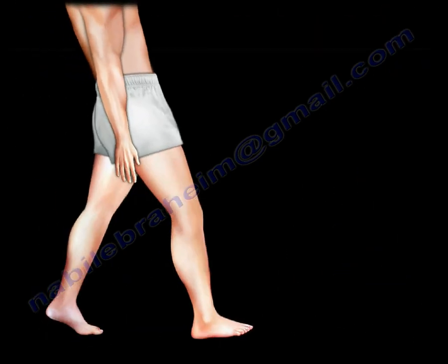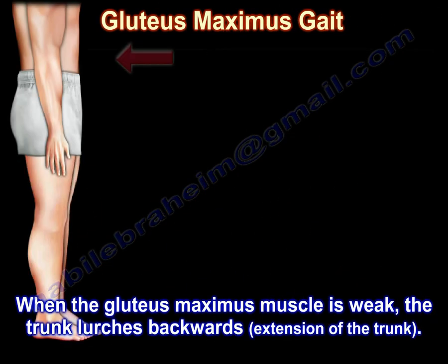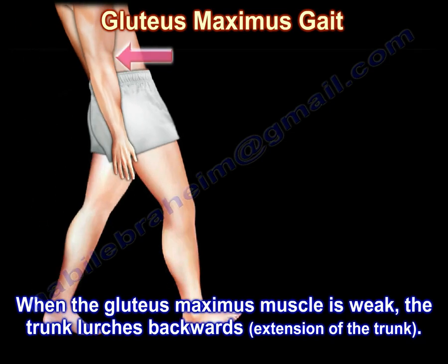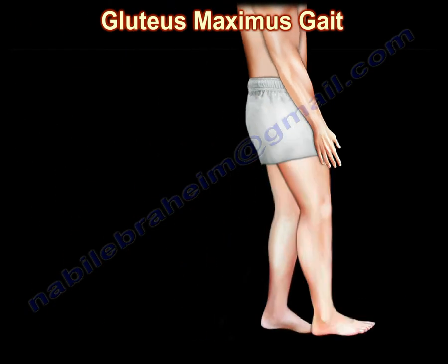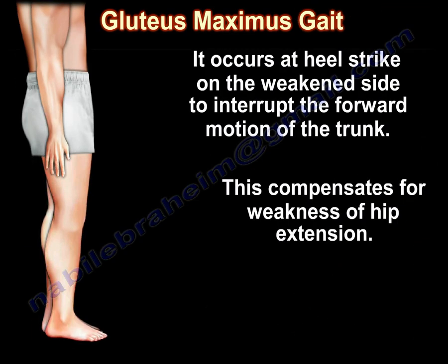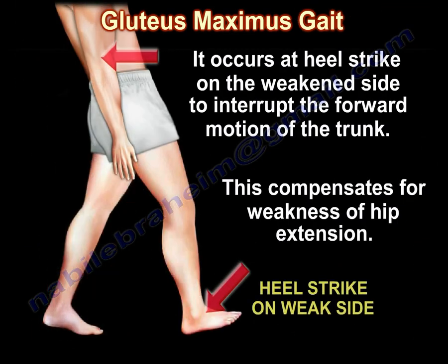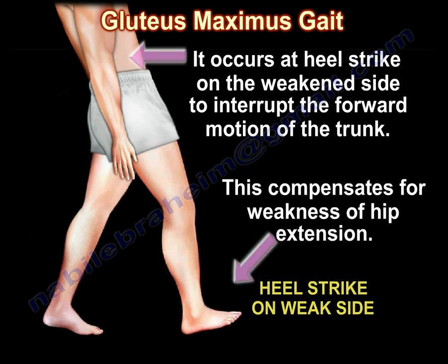When the gluteus maximus muscle is weak, the trunk lurches backwards. It occurs at heel strike on the weakened side to interrupt the forward motion of the trunk. This compensates for weakness of hip extension.